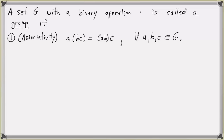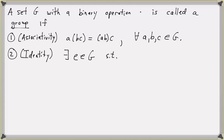Secondly, this set has an identity element. We denote the identity as E. So we have an element E in G called the identity, such that AE equals EA equals A for any A in the set G.